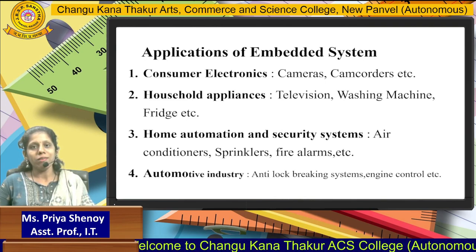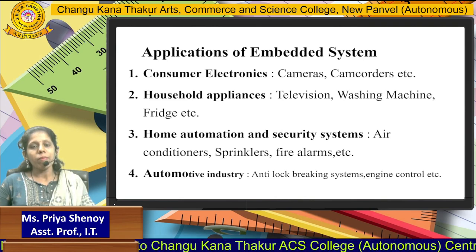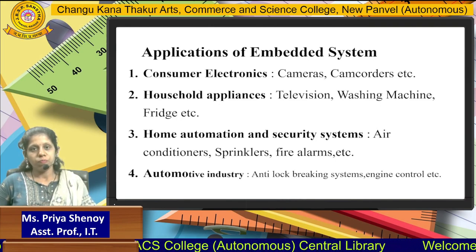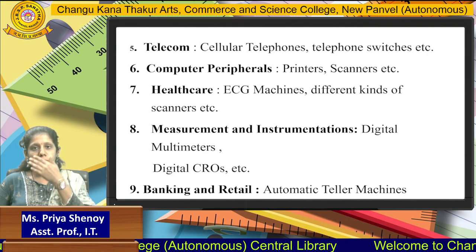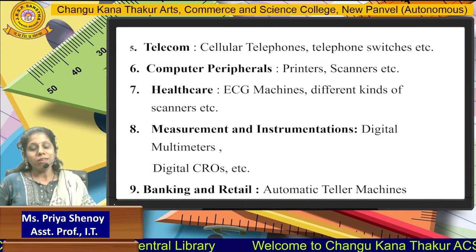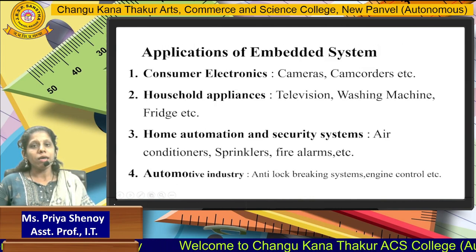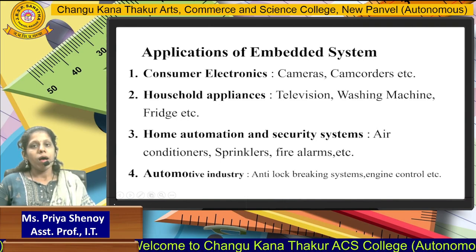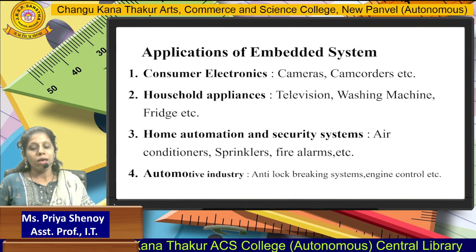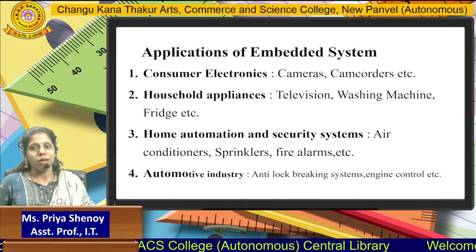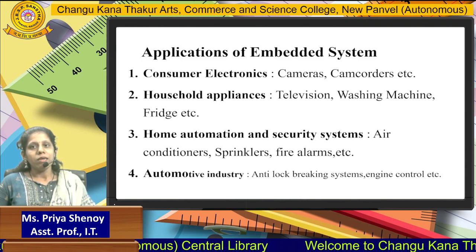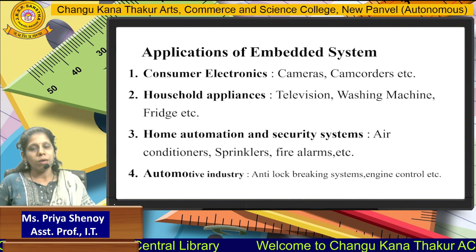Embedded system can be used in variety of ways, right from consumer electronics to healthcare, banking and retail. First, in consumer electronics, embedded system is used in variety of instruments such as cameras, camcorders etc. For household appliances, television, washing machine, fridge — all these are having an embedded system in some or the other form.